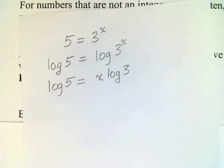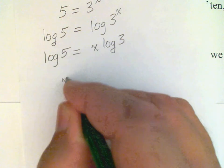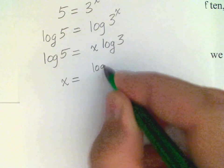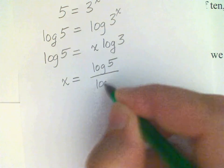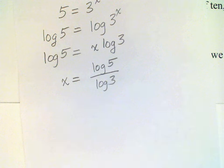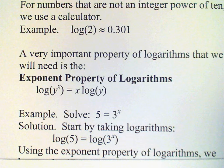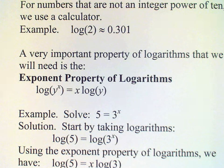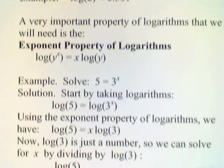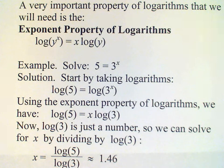Now, of course, log 5 and log 3 are just numbers. I can find those on my calculator. And so, therefore, I can solve for x as just log 5 divided by log 3. And that's written out here in the notes. And the answer turns out to be about 1.46.